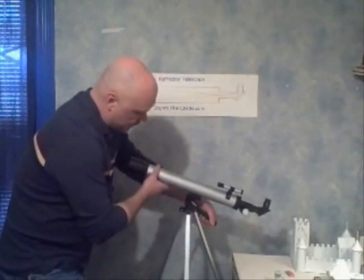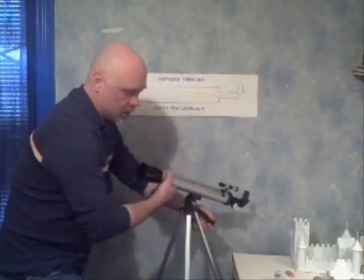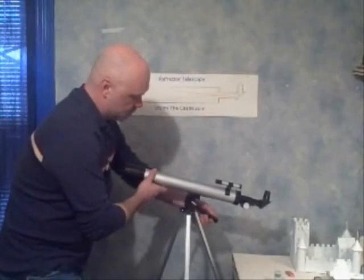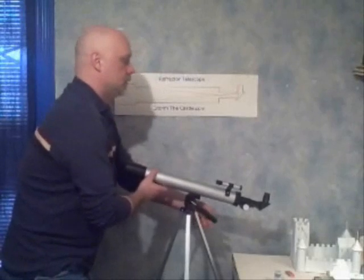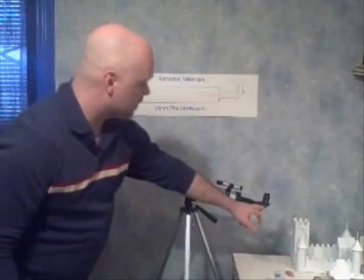And this is on an altazimuth mount, which means it goes up and down or side to side. So it's just a basic, simple telescope. One more thing is this prism here.